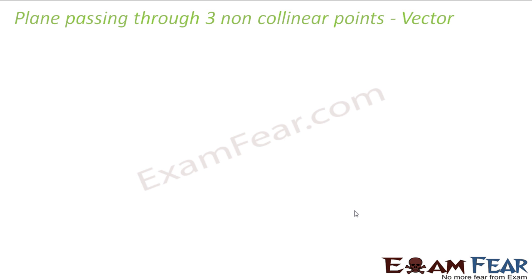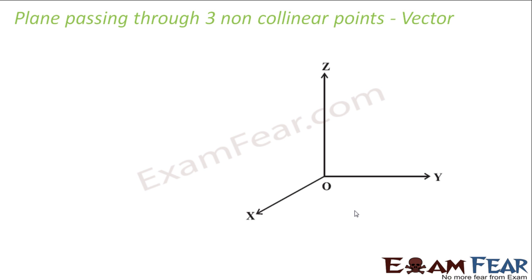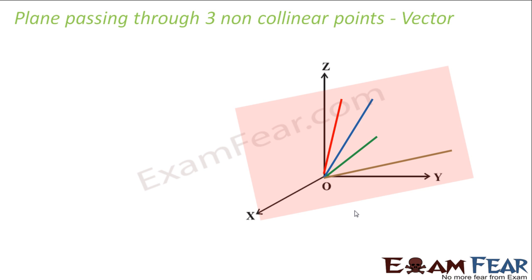Now let's take the third scenario where we have a plane that passes through three non-collinear points. So I have my XYZ plane and I have three points. Let's say another point — let the red one be R vector, the general vector. This point is A, this vector is B, and this vector is C. So I have three points given: A, B, and C are three points, and let R be a general point.